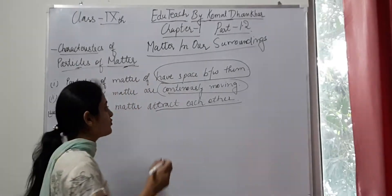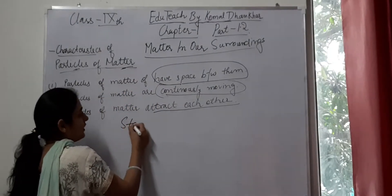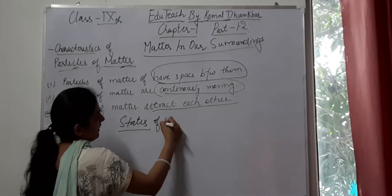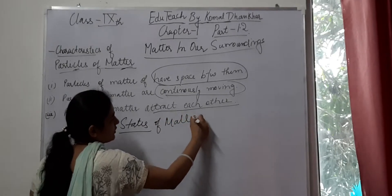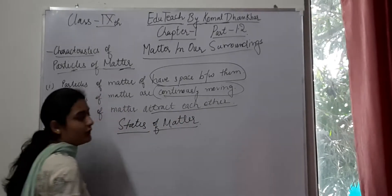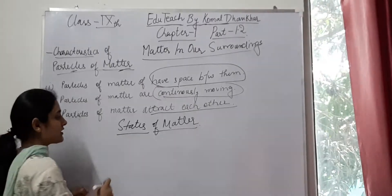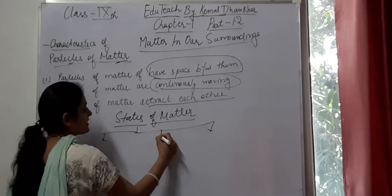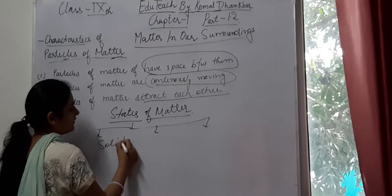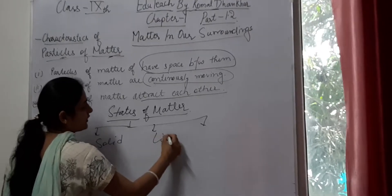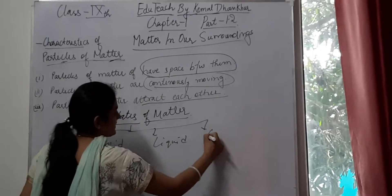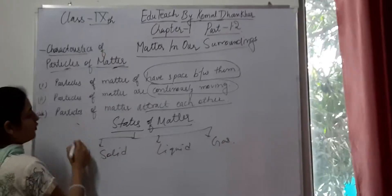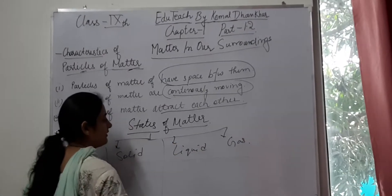We will divide matter into different states, which we will cover in the next video, but let me briefly introduce it. We can classify the states of matter into three categories: solid, liquid, and gas.